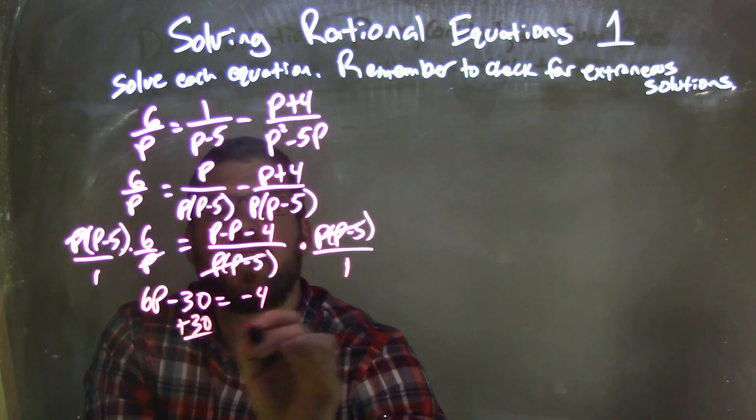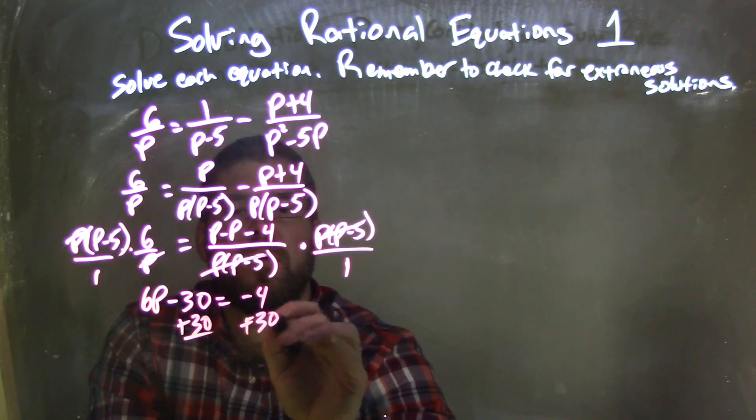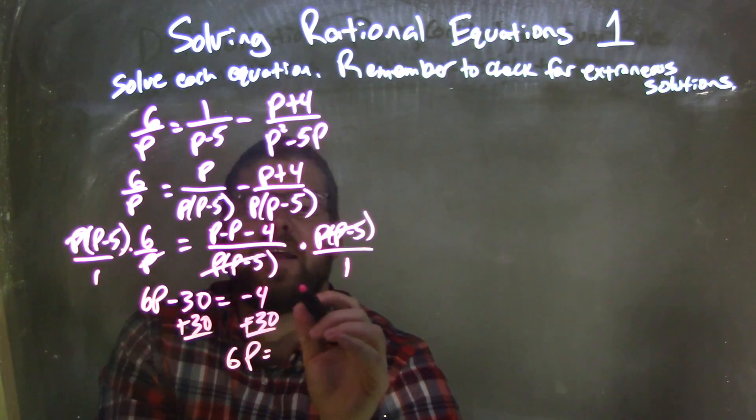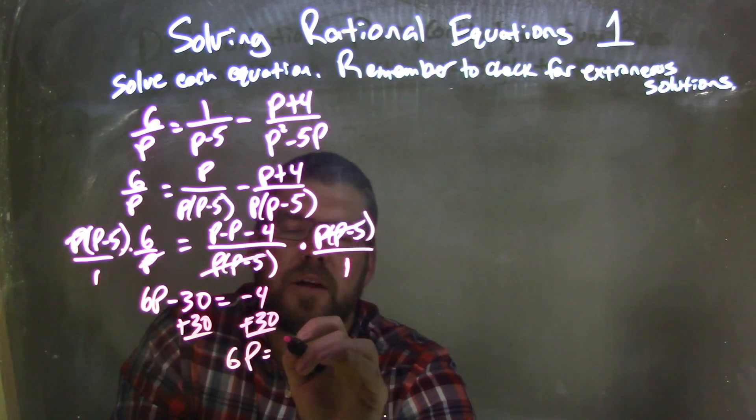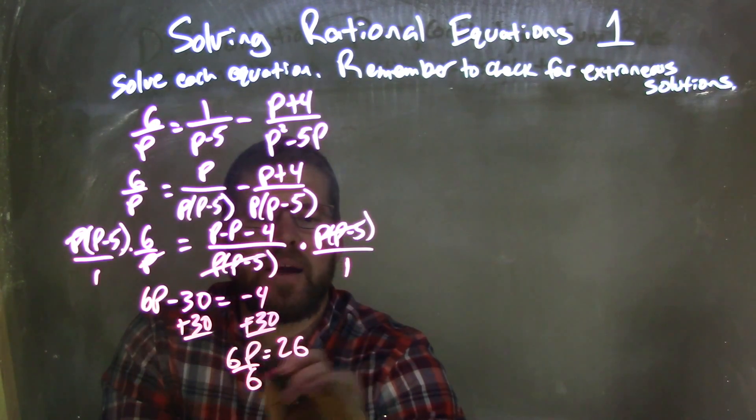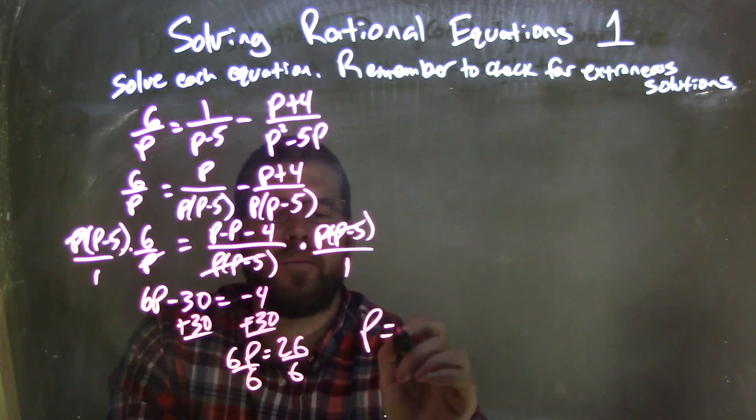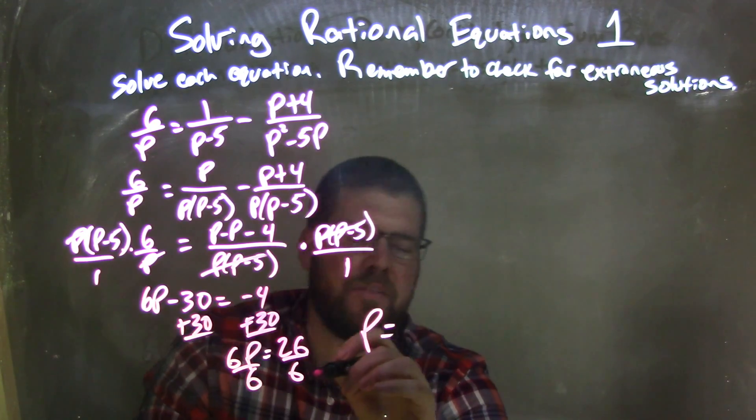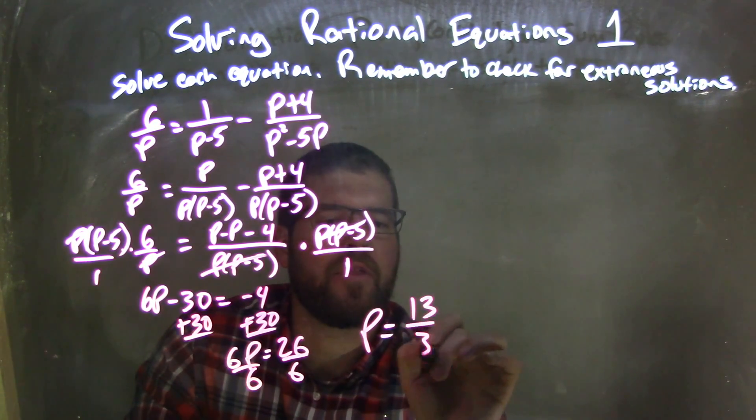So if I add 30 to both sides, I'm left with 6p equals negative 4 plus 30, which comes out to be a positive 26 divided by 6, and p here by itself, we can simplify it: 26 divided by 6, both are divisible by 2, is 13 over 3.